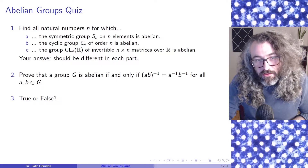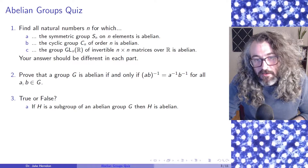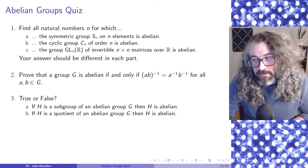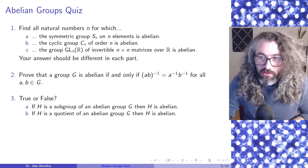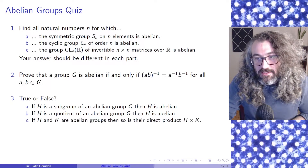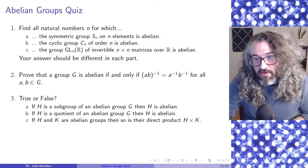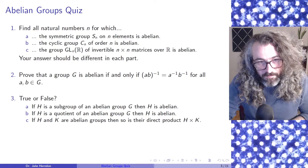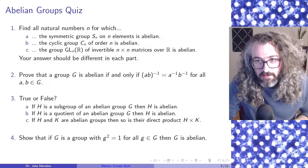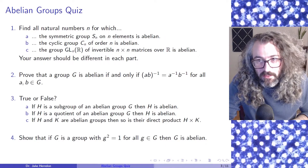Problem 3, True or False. Part A: If H is a subgroup of an abelian group G, then H is abelian. Part C: If H and K are abelian groups, then so is their direct product H cross K. Problem 4: Show that if G is a group so that the square of any element is the identity element, then G is abelian.